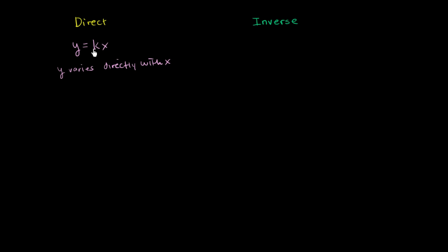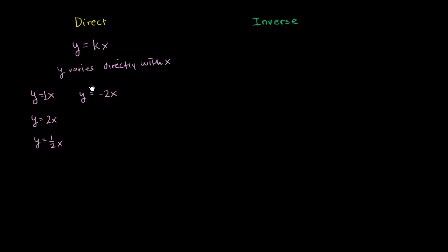If this constant seems strange to you, just remember it could be literally any constant number. So let me give you some particular examples of y varying directly with x. You could have y = x (where the constant is 1), y = 2x, y = ½x, y = -2x — we are still varying directly — y = -½x, y = πx, y = -πx. Any constant times x means we are varying directly.